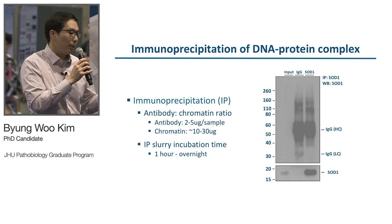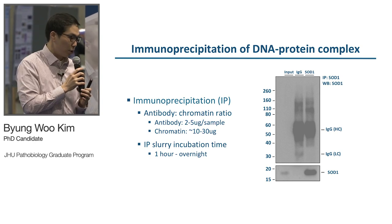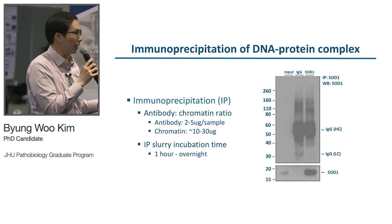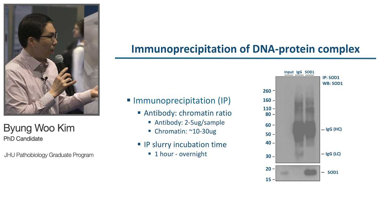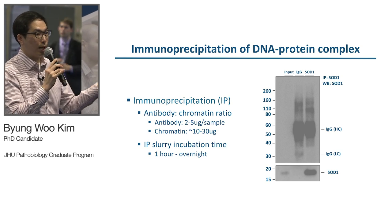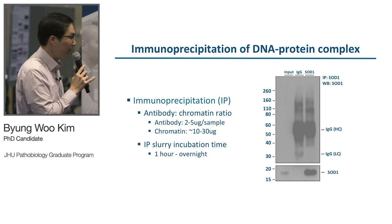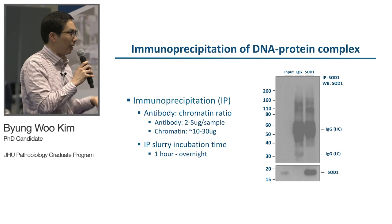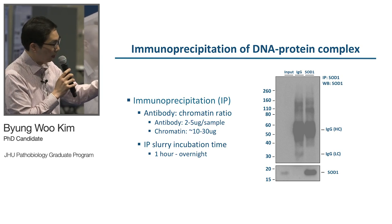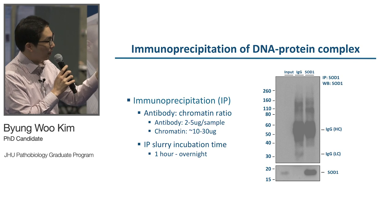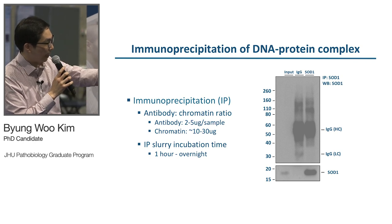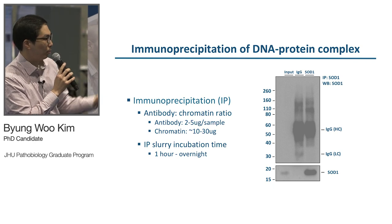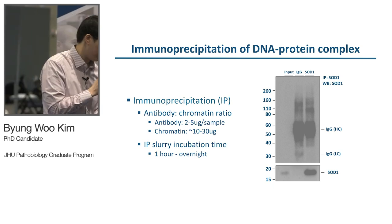With this sheared chromatin, you do IP. We typically use about 2 to 5 micrograms of antibody and 10 to 30 micrograms of chromatin, combining them and incubating at 4 degrees for about an hour up to overnight. The result is shown on the right side — we did western blotting using IP samples. You see a strong SOD1 band detected with samples pulled down by SOD1 antibody, whereas you don't see any SOD1 band with the IgG pulldown sample, suggesting this was a successful IP.